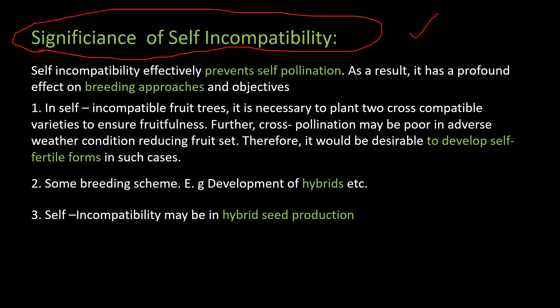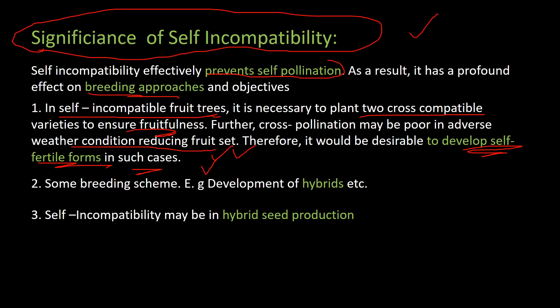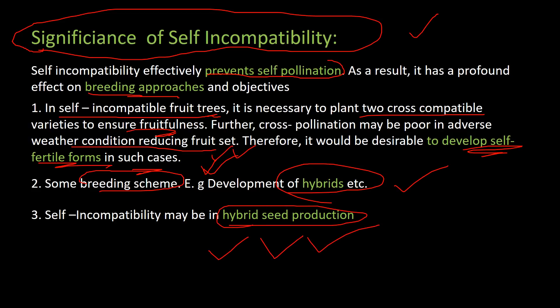The significance of self-incompatibility: it effectively prevents self-pollination and has a profound effect on breeding approaches. In self-incompatible fruit trees, it is necessary to plant two cross-compatible varieties to ensure fruitfulness. Cross-pollination may be poor in adverse weather conditions, reducing fruit set, so it is desirable to develop self-fertile forms. Self-incompatibility is also used in hybrid seed production and development of hybrid varieties.